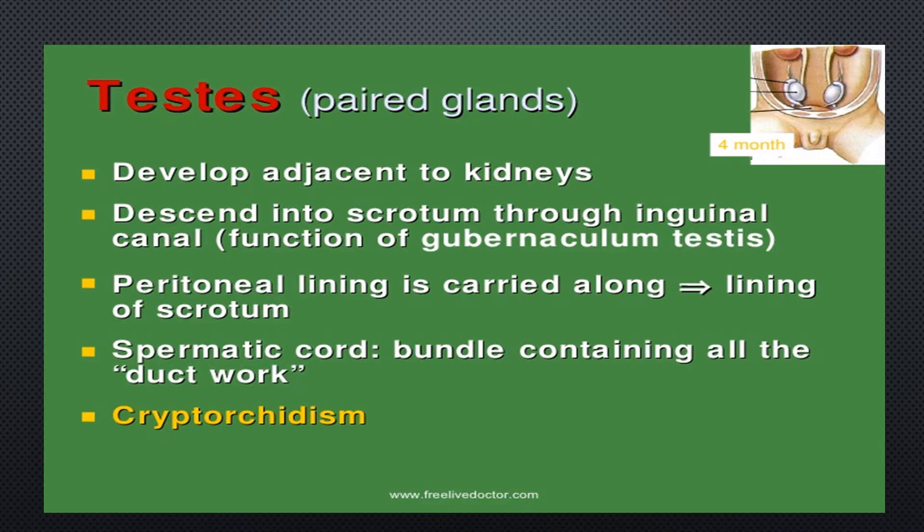The testes are paired glands that develop adjacent to the kidneys and descend into the scrotum through the inguinal canal by the function of the gubernaculum testis. The peritoneal lining is carried along as the lining of the scrotum, and a spermatic cord bundle contains all the ductwork. Failure to descend is called cryptorchidism.